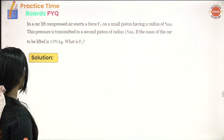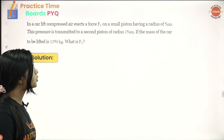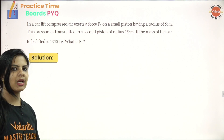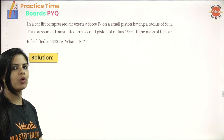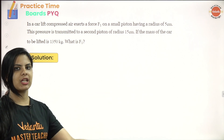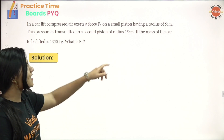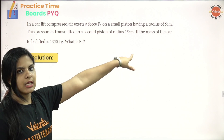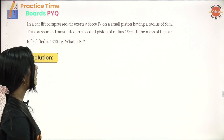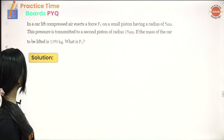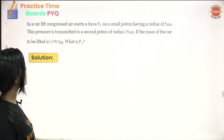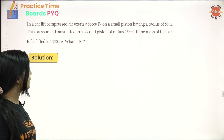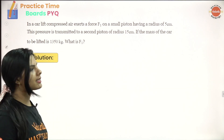This pressure is transmitted to a second piston. If we are going to lift the car, we use that pressure. The radius of the second piston is 15 cm. If the mass of the car to be lifted is 1,350 kg, what is F1?